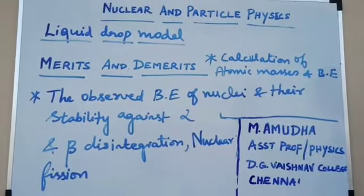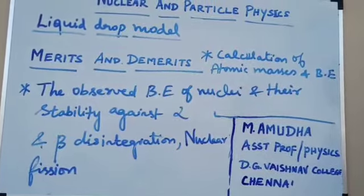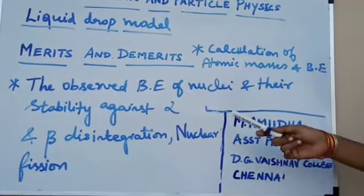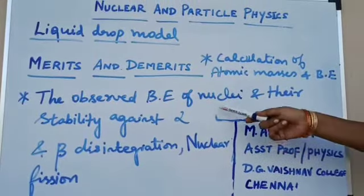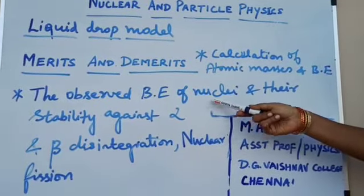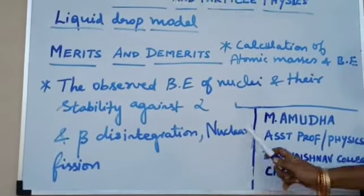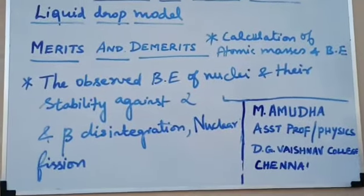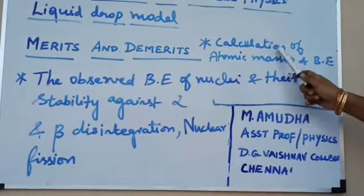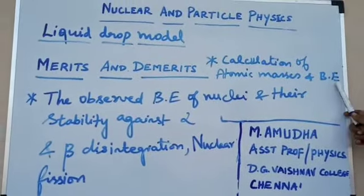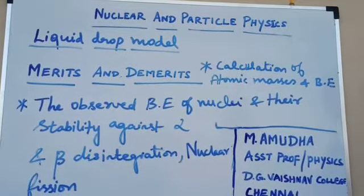Under the liquid drop model, today we are going to see the merits and demerits of the liquid drop model. The first merit is that the observed binding energy of nuclei and the stability against alpha and beta disintegration, as well as nuclear fission, can be explained using the liquid drop model. The second merit is that we can calculate the atomic masses and binding energy of the nucleus using the liquid drop model with very good accuracy.